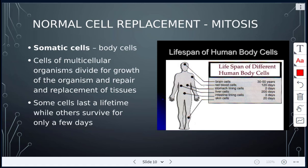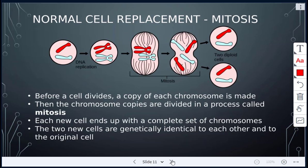Just a quick review from last class: we talked about cell division and mitosis specifically. Mitosis occurs in body cells, called somatic cells, not in gametes. Mitosis is for normal cell replacement, repairing cells, and growth. The DNA first has to replicate and then the cell divides, giving two daughter cells which are identical to the parent cell. Each new cell ends up with a complete set of chromosomes.